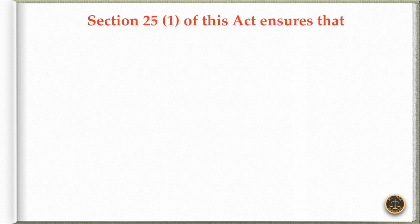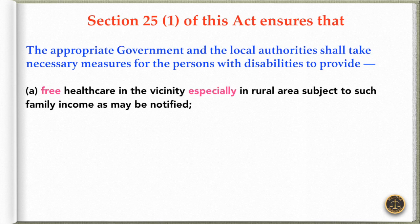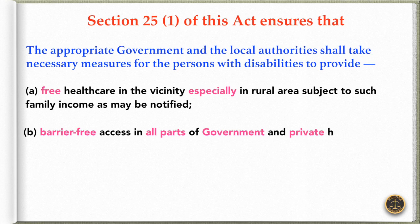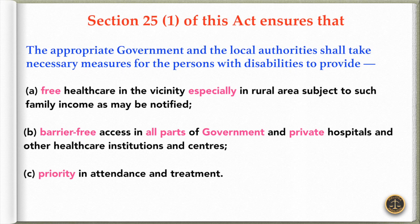Section 25.1 of this act ensures that the appropriate government and the local authority should take necessary measures for persons with disabilities to provide free health care in the vicinity, especially in rural areas, subject to such family income as may be notified. This includes barrier-free access in all parts of government and private hospitals and other health care institutions and centers, and priority in attendance and treatment.